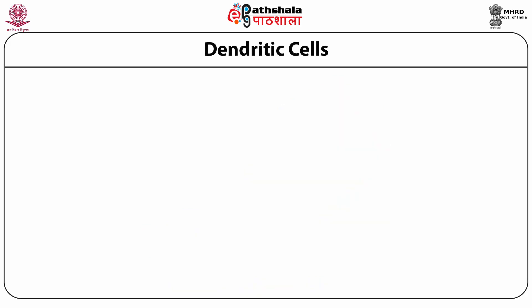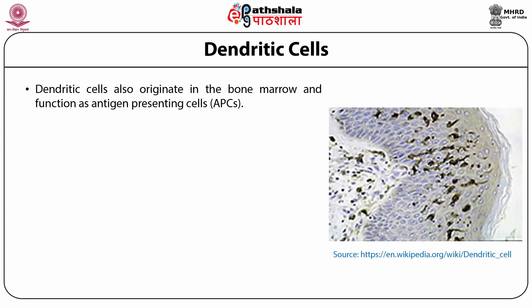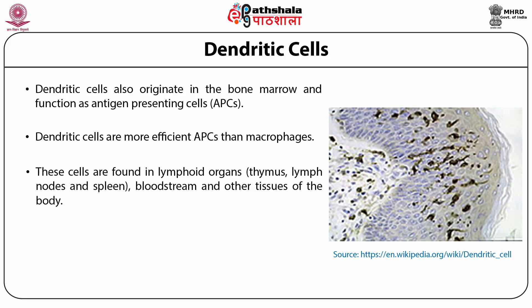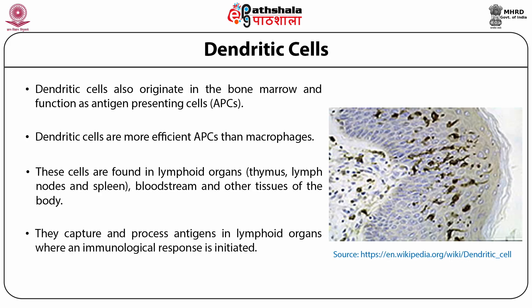Dendritic cells also originate in the bone marrow and function as antigen-presenting cells (APCs). Dendritic cells are more efficient APCs than macrophages. These cells are found in lymphoid organs — thymus, lymph nodes, and spleen — as well as in the bloodstream and other tissues of the body. They capture and process antigens in the lymphoid organs where an immunological response is initiated.